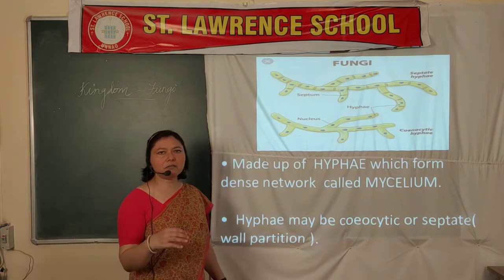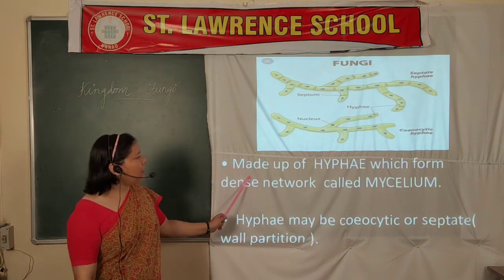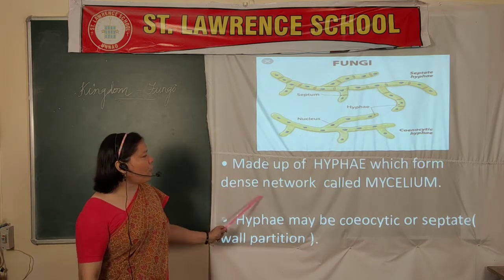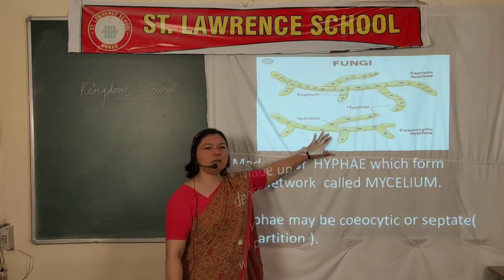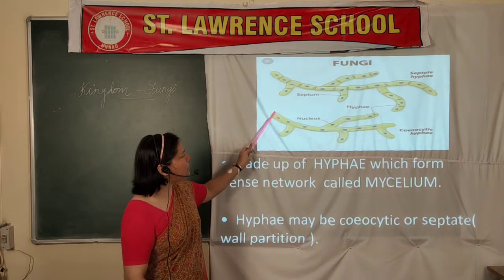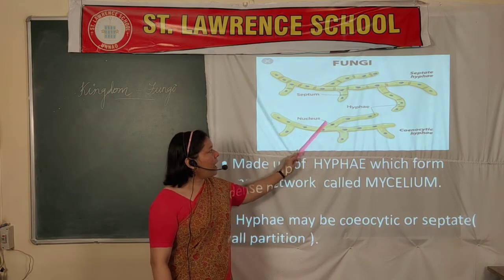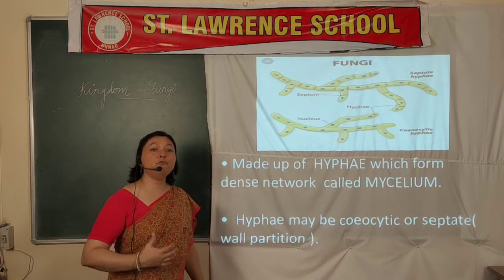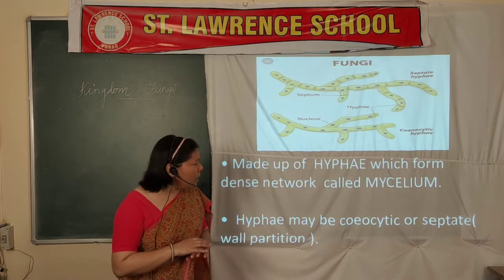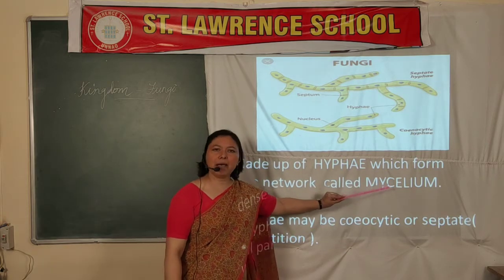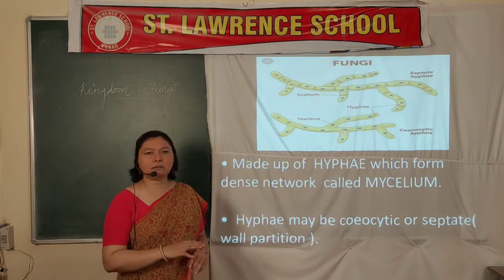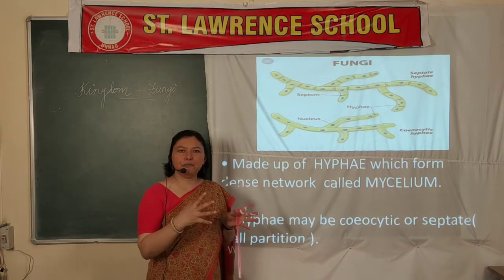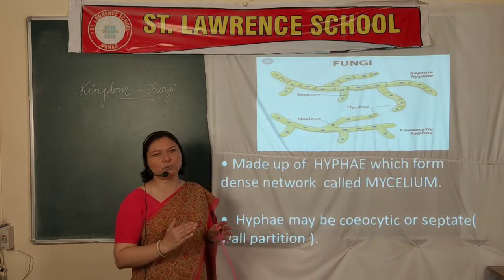Coming to the basic structural plan of fungi, they are made up of hyphae. Hyphae are the main structures — thread-like structures which form a dense network. Individually they are single thread-like, possessing a nucleus, cytoplasm, and a cell wall. These hyphae form a large, dense network called mycelium. Because of this dense network, we do not see individual hyphae but rather the mycelium as a whole.